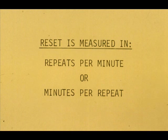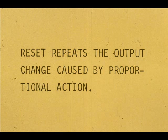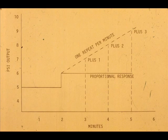Reset is measured in repeats per minute or minutes per repeat — one is the reciprocal of the other. Reset repeats the controller output change caused by proportional action. This curve shows a proportional response to a step change in the set point at time two minutes. The output change is one pound, from five to six psi. This one pound change is what is repeated by the reset action. The reset rate shown here is one repeat of the one pound output per minute.